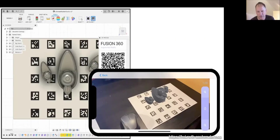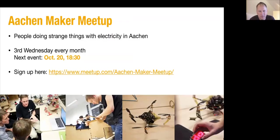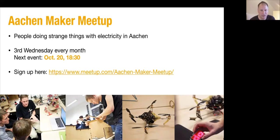Beyond classes, we have two kinds of events we hold regularly. We have an Aachen Maker Meetup — I've been running that for over 10 years. We meet every third Wednesday of the month. The tagline is 'people doing strange things with electricity.' If you're into 3D printing, hacking microcontrollers, LED strips, building light-up garments, or any other strange stuff with electricity, you're welcome to join. We haven't been able to meet in person due to COVID, but we have an online meetup — the next event is October 20th. You can find it at our jump page under /amm or directly at meetup.com.